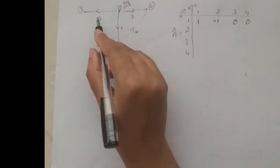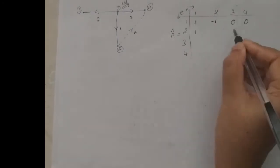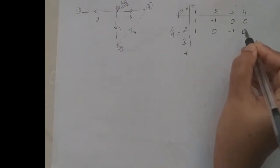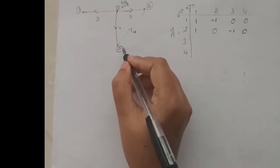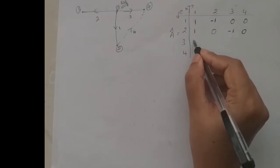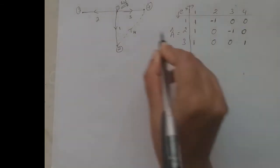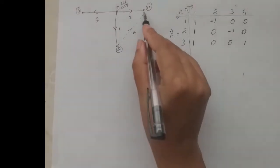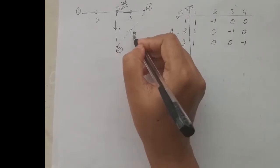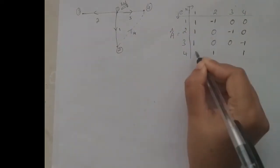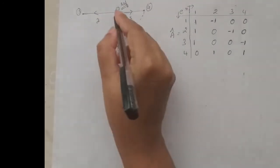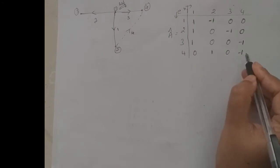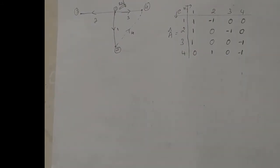The second element is between nodes one and three. It is away from one so plus one, and towards three so minus one. The remaining entries are zero since it is not incident to nodes two and four. The third element is between one and four: away from one gives plus one, towards four gives minus one. The remaining two are zero since it is not incident to nodes three and two. The fourth element is between two and four, giving minus one at node four.